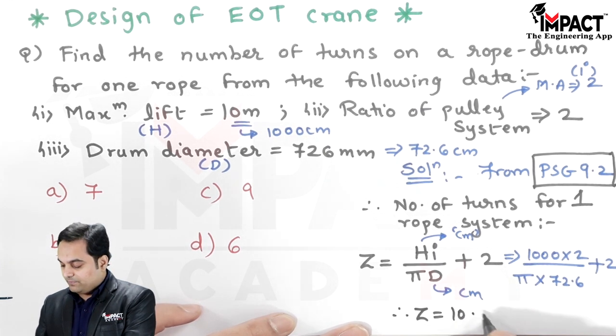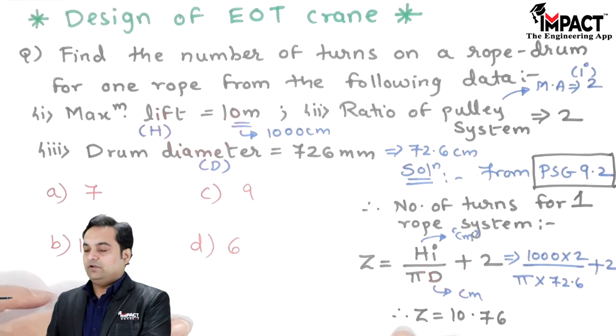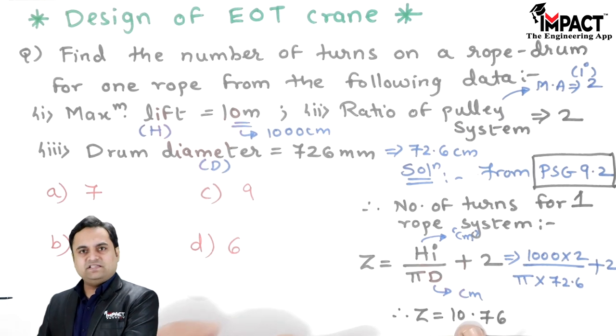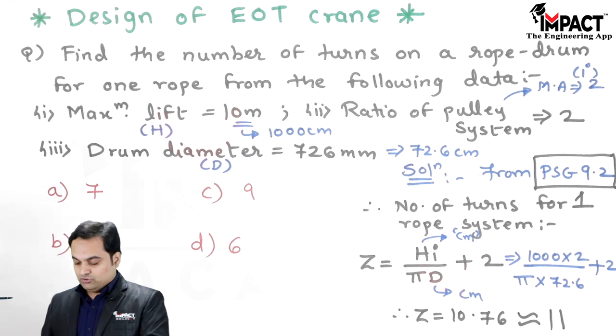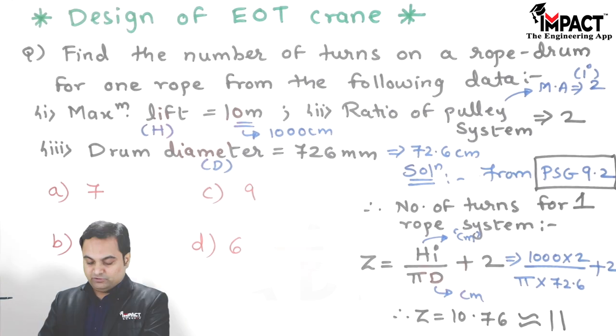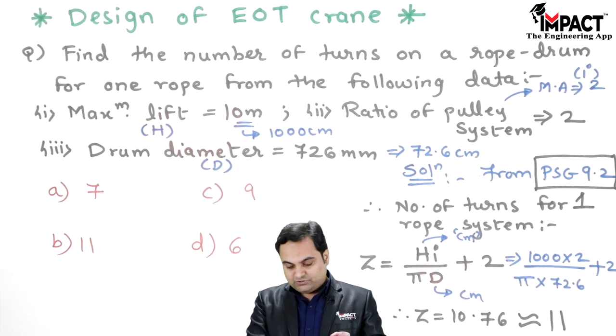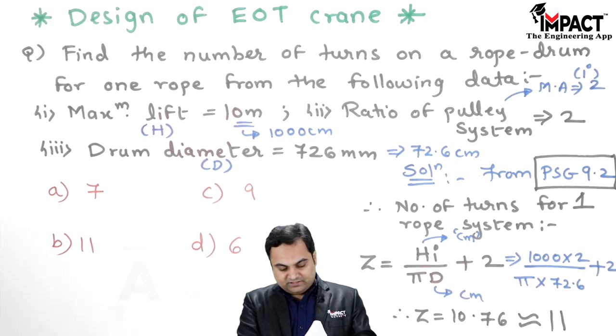Now remember that the number of turns won't be in decimal form, so round off to the next higher value, which is 11. So out of the options which are available to us, 11 is there in option B. So that is the correct answer.